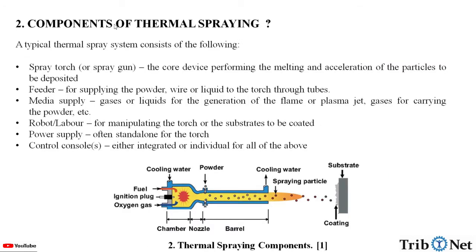Now let us understand the components of thermal spraying. A typical thermal spray system consists of the following components: a spray torch or spray gun, which is the core device performing the melting and acceleration of the particles to be deposited, and a feeder for supplying the powder, wire or liquid to the torch through tubes.